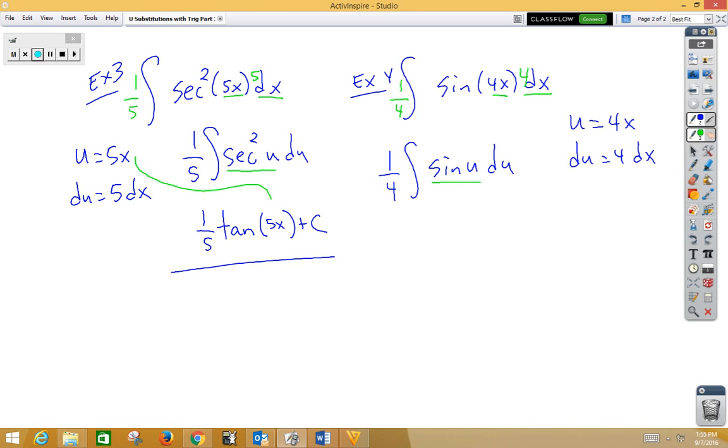Now, sine is close to the derivative of cosine. We would need a negative. If I want to put a negative on the inside, I need to undo it with a negative on the outside. Well, now we have cosine, so we have negative 1 fourth cosine. It's not really u. It's really 4x plus c.